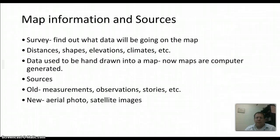Whenever you look at a map, you should see the sources on it — where the information came from. Survey data helps find distances, shapes, and climates. Going back to maybe the 1970s, data was hand-drawn onto maps, but now it's all done by computer. Old maps used measurements, observations, and even stories, which is why some old maps are really wrong. Now we have aerial photos, satellite images, and GPS information, so the sources are much, much better.